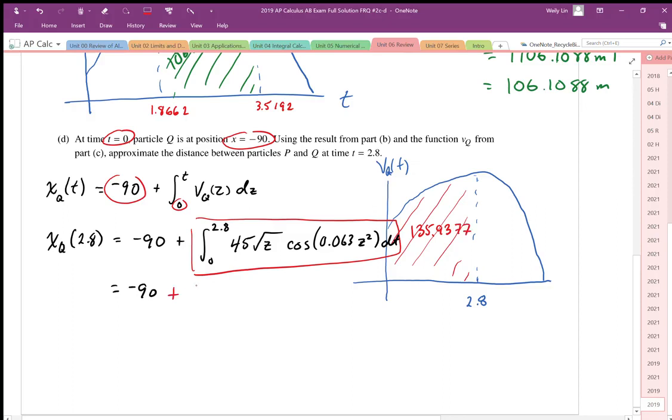Typing this into my graphing calculator, I get 135.9377. That's our displacement from our initial position of negative 90. So the position at 2.8 is going to work out to be 45.9377 meters.